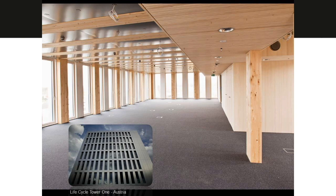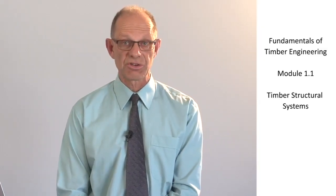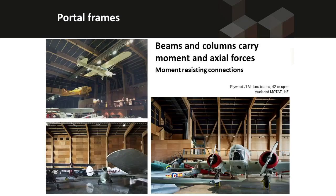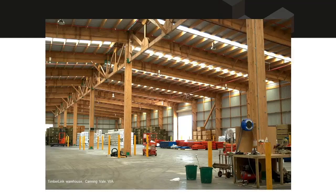Lateral loads on this type of structure have to be carried by other structural systems such as bracing walls. In portal frames, the beams and the columns are connected together using rigid moment-carrying connections, and those rigid moment-carrying connections transfer lateral loads as well as gravity loads down to the ground. In the photos on this slide, you can see that the gravity loads are reasonably substantial, being complete aircraft. In industrial settings, portal frames are often used out of timber, and these structural systems make use of larger members. These ones here are glued laminated timber, and again we have large connections that carry moments at the junctions between the beams and the columns.